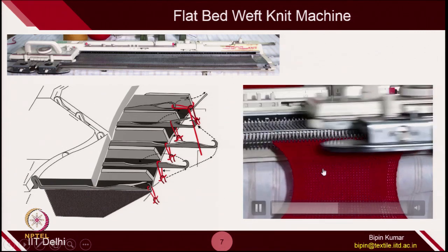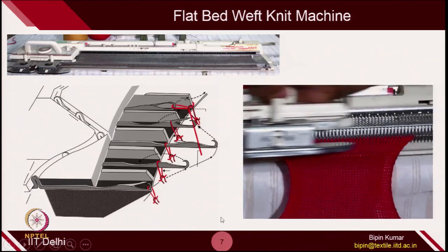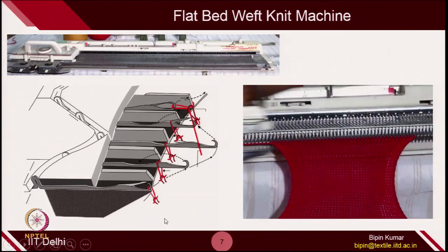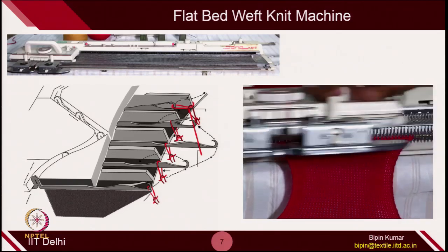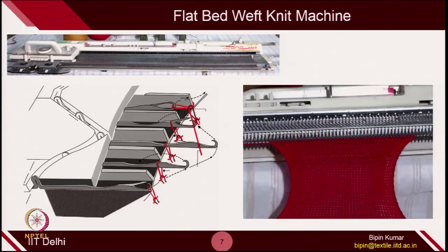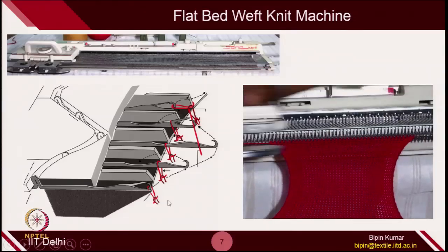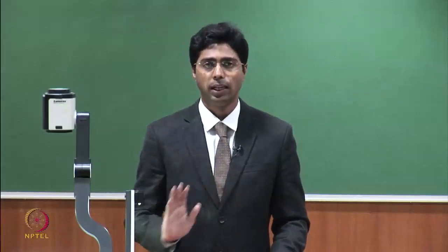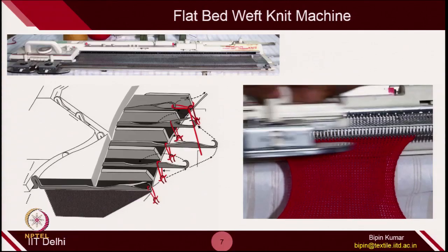This reciprocating movement of the needle is done by the movement of the cam jacket from left to right and right to left. During this movement, the butt of the needle interacts with the grooves inside the cam jacket, causing the needle to do reciprocating movements. Each needle position has significance during loop formation, and you can see in this video how the loop gets formed — many needles participating simultaneously.